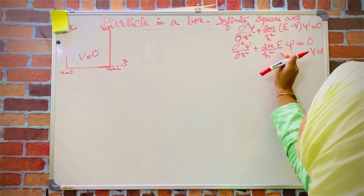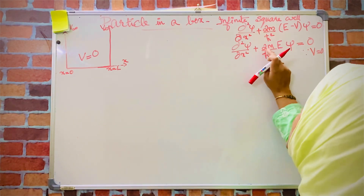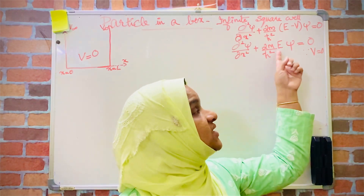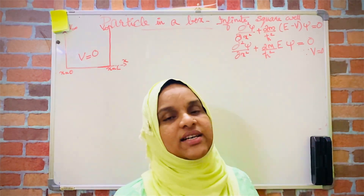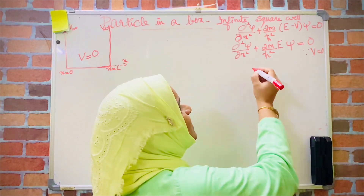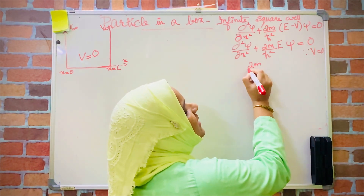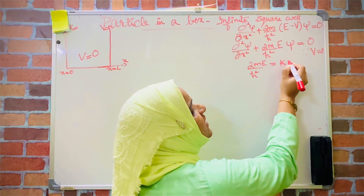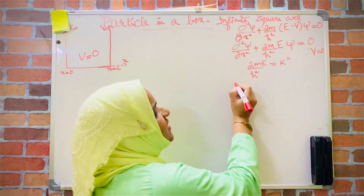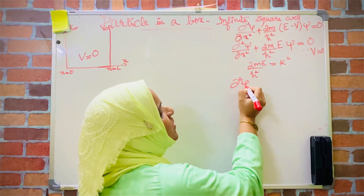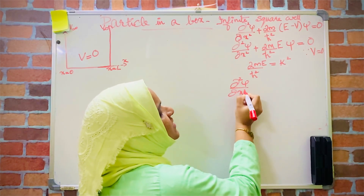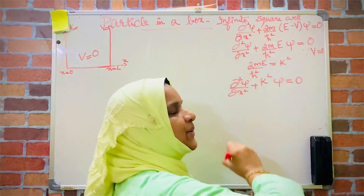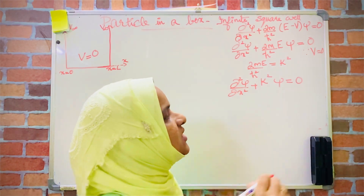These three quantities — m (mass of the particle), E (total energy), and ħ² — are constants. So the term (2mE/ħ²) can be taken as equal to another constant k². Substituting into the equation, it becomes ∂²ψ/∂x² + k²ψ = 0. Mark this as equation number 2, and the previous as equation number 1.